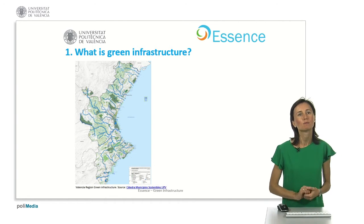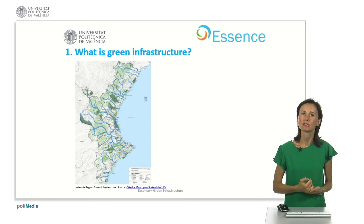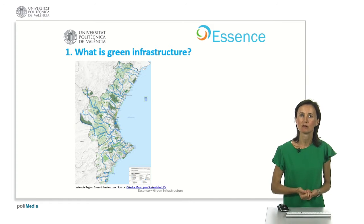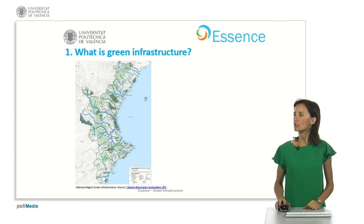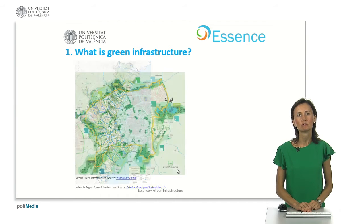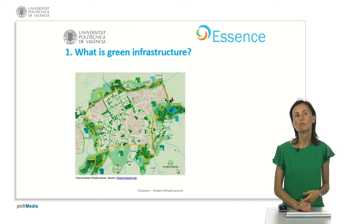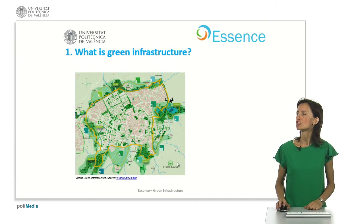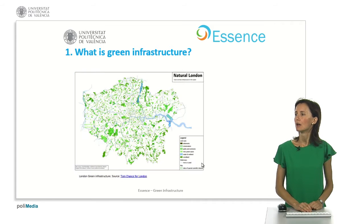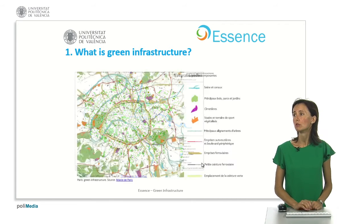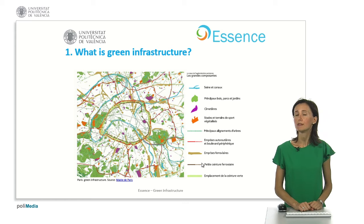Green infrastructure can be implemented at different scales. For instance, from regional scales like in the Valencia region, or in more local scales like this map shows in Vitoria, London, or the green infrastructure in Paris.